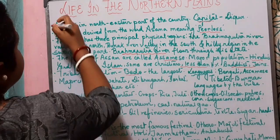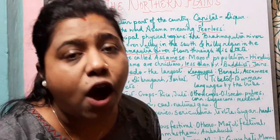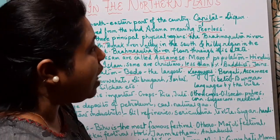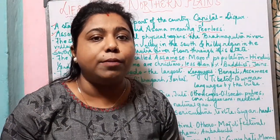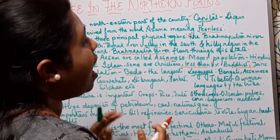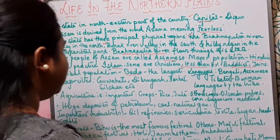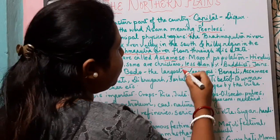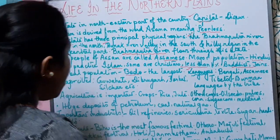Let us recapitulate what we learned about Assam. Assam is a state in the northeastern part of the country. The name is derived from 'Assama' meaning peerless in the now-extinct Ahom language. The state has three principal physical regions: the Brahmaputra river valley in the north, the Barak river valley in the south, and the hilly region in the south-central part. The capital of Assam is Dispur. The people are called Assamese, mostly Hindus, with one-third practicing Islam, some Christians, and less than one percent Buddhists and Jains. Bodo is the largest tribal population. Languages spoken are Bengali and Assamese, and tribal people also speak Tibeto-Burman languages. Major cities are Guwahati, Dibrugarh, Jorhat and Silchar.